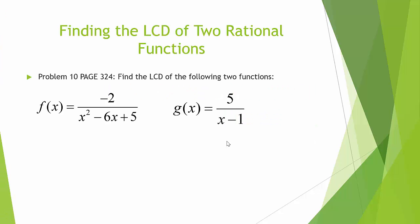We want to find the LCD of f of x, which is the function negative 2 divided by x squared minus 6x plus 5, and g of x, which is equal to 5 divided by x minus 1.